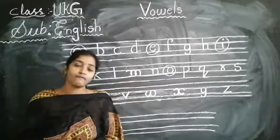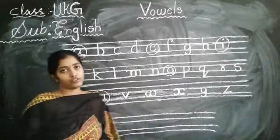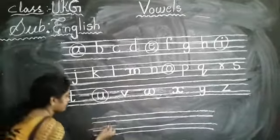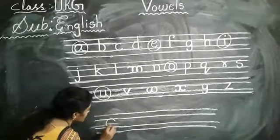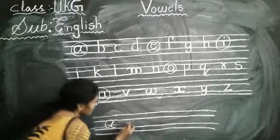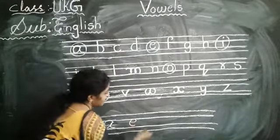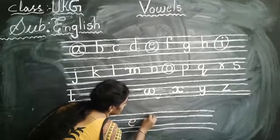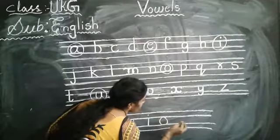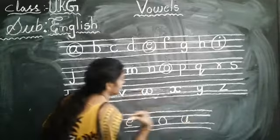What is A? Vowels. What is A? Vowels. So we will write vowels now. What are vowels? Just now I said — A, E, I, O, U.